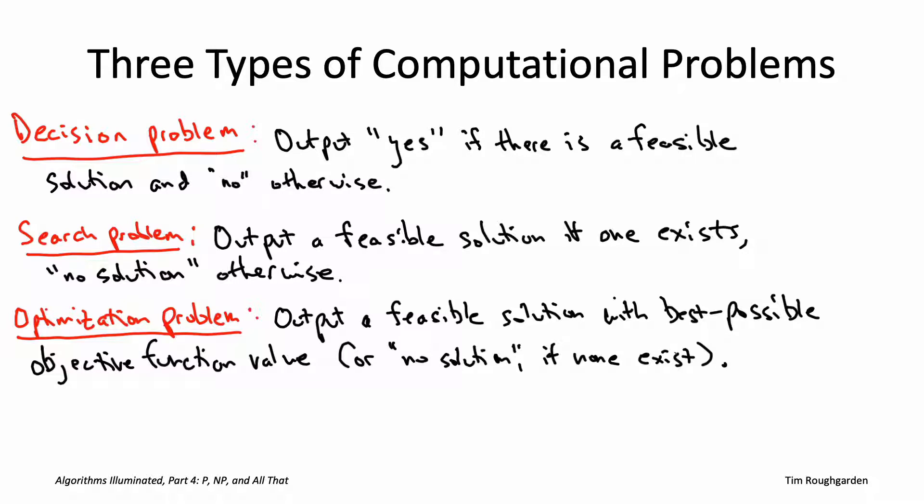Now complexity classes, as we'll be discussing in this chapter, they usually stick with problems of only one of these three categories to avoid type checking errors. When we define the complexity class NP formally in the next video, it will be defined as a class of search problems.